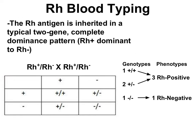Interestingly, another common blood type antigen — the RH factor — shows classic Mendelian inheritance. If your blood is A positive or O negative, the positive or negative part is the RH factor. RH positive is dominant to RH negative. In a cross, you get 1 plus-plus, 2 plus-minus, and 1 minus-minus. Both plus-plus and plus-minus give the phenotype of RH positive, whereas only minus-minus gives RH negative — classic Mendelian inheritance.